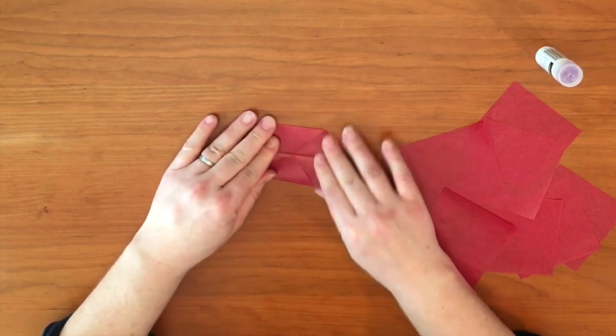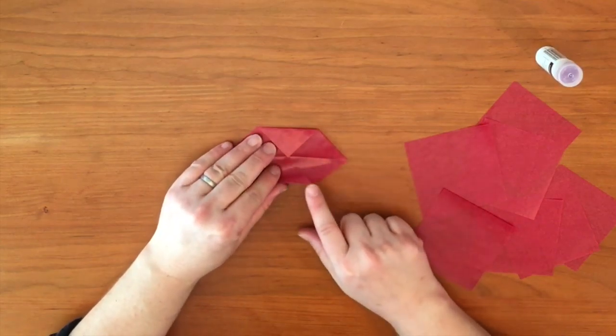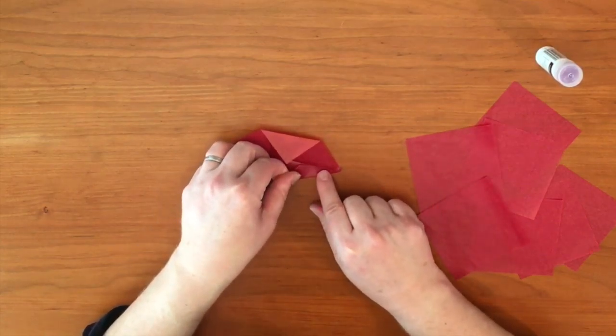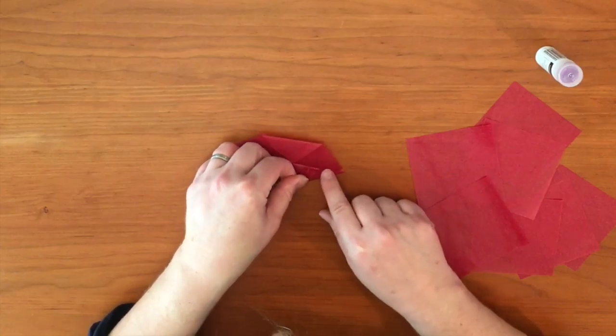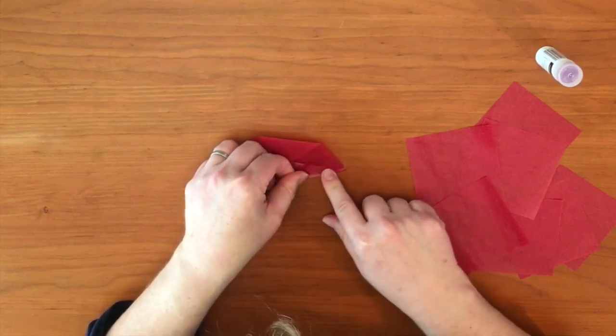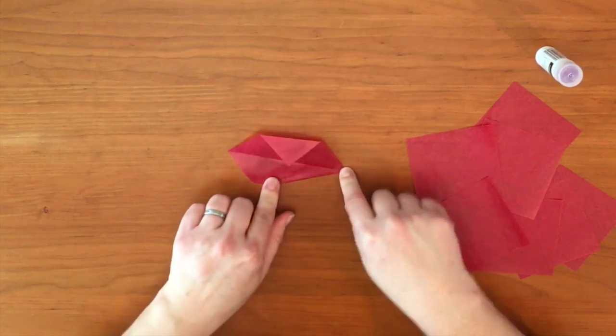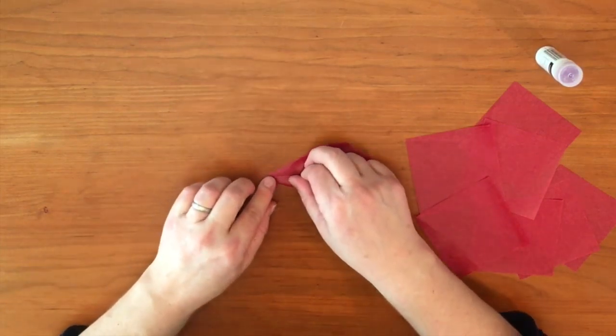Now I'm going to take this corner and bring it to the center line and give it a nice sharp crease. Now we're going to do the same thing with the other side.